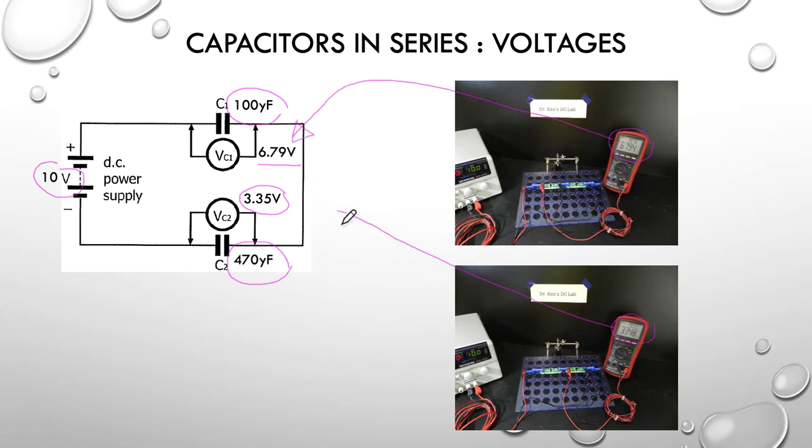And of course if we add 6.79 to 3.35 it comes back very close to our 10 volts on our power supply. So, the voltages around a series capacitor circuit add up to the applied voltage. So, VT = VC1 + VC2.